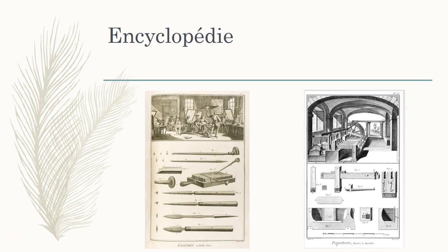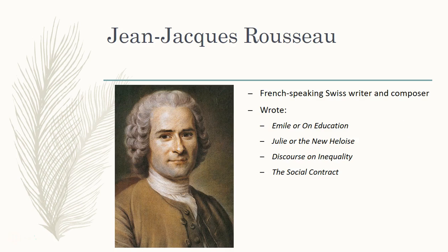Along with Voltaire and Montesquieu, the last person we're going to talk about today also wrote for the Encyclopedia, and that is Jean-Jacques Rousseau. He was a French-speaking Swiss writer, composer, and philosopher. In many ways, we can kind of see Jean-Jacques Rousseau as an anti-philosophe. So we've been talking about all these philosophes — Rousseau kind of fits in with them, but especially in one key area, his view is almost anti-philosophe. He wrote a number of works, including Emile, or On Education; Julie, or The New Heloise; a Discourse on Inequality; and a very famous work called The Social Contract.